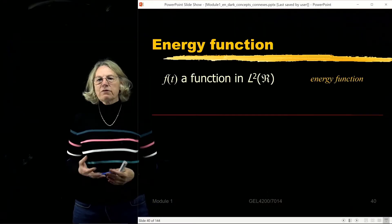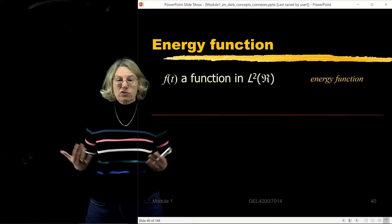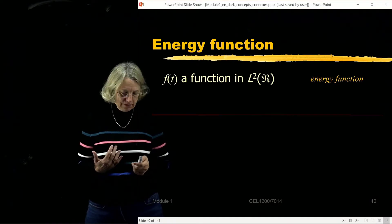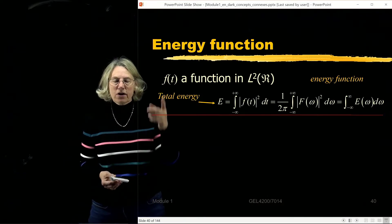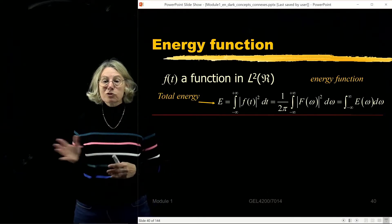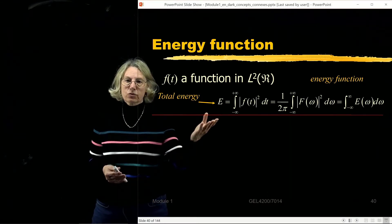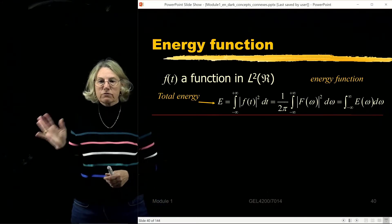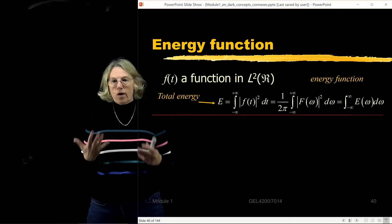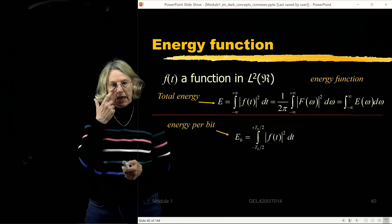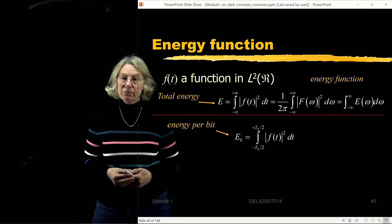I talked about the energy function already when discussing Parseval's theorem and the spectrum. I discussed the interpretation of the results as energy, saying we can think of a function in time as being like a voltage going through a unit resistance. In that case, when I take the integral over time from minus infinity to infinity of the voltage squared, I'm getting the energy. And for instance, I could define for a communication system an energy per bit.